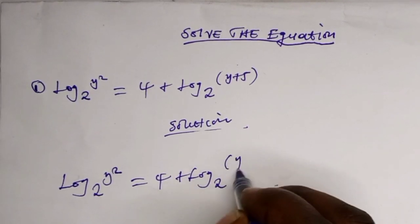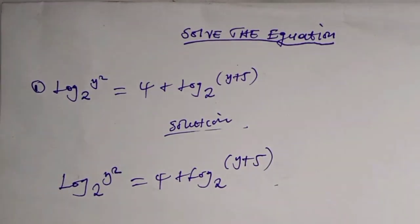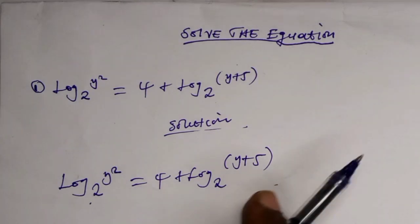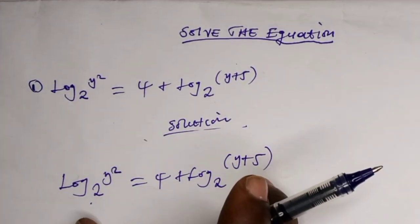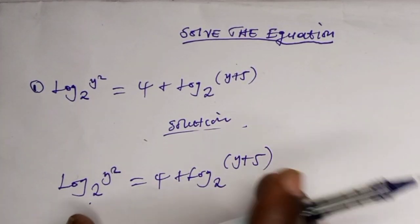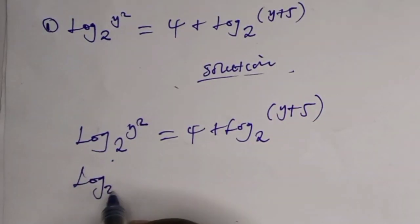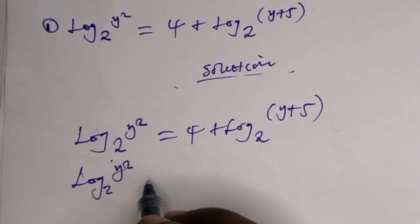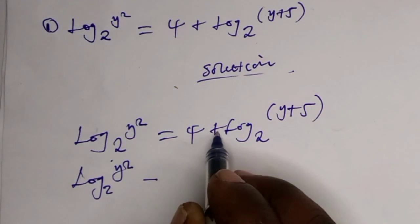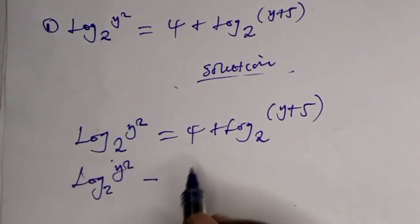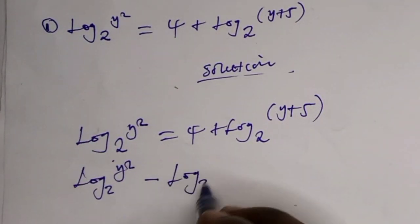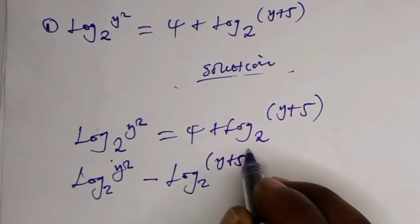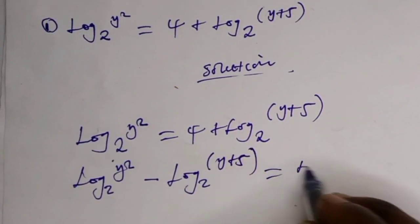If you can see, the bases here are the same. What you have to do is collect the like terms. It will be log base 2 of y squared minus — because this is positive, we need to move it — log base 2 of y plus 5, equals 4.